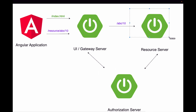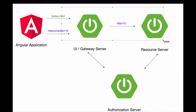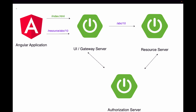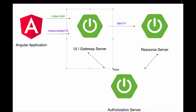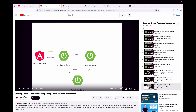We are following this architecture: we have a UI or gateway server responsible for serving the Angular application and routing traffic to the resource server. We have an authorization server for authenticating users, a resource server holding secured resources, and the Angular application served by the UI server. All three components were created in previous videos, but we have not yet served the Angular app from the UI or gateway server.